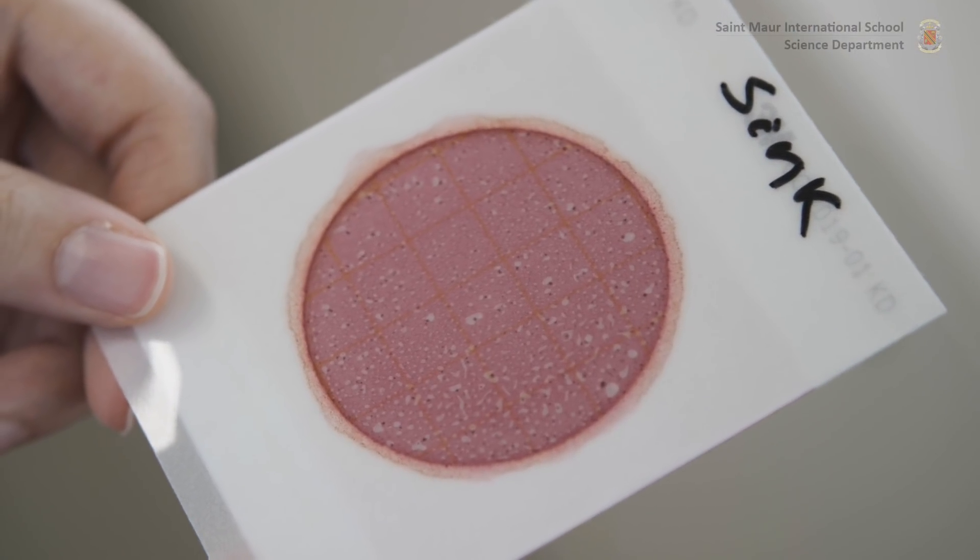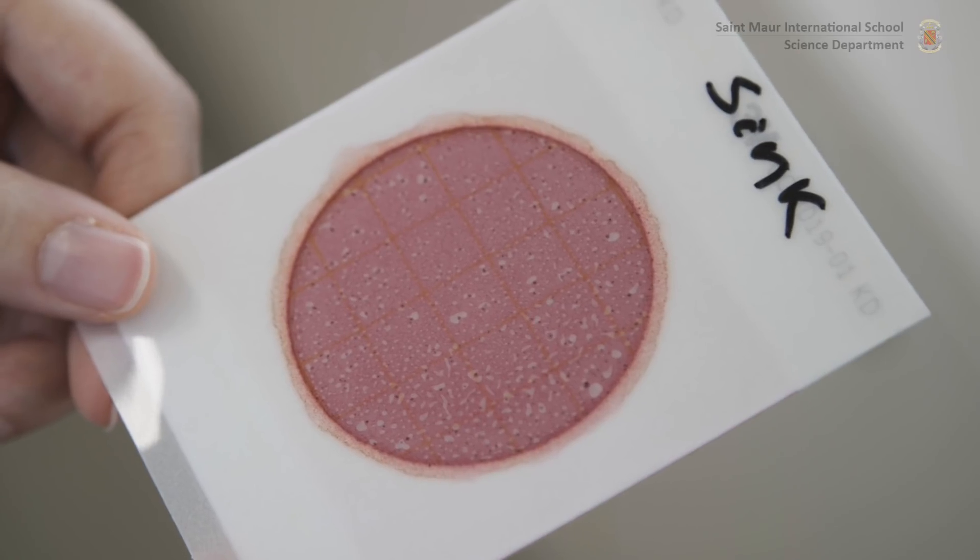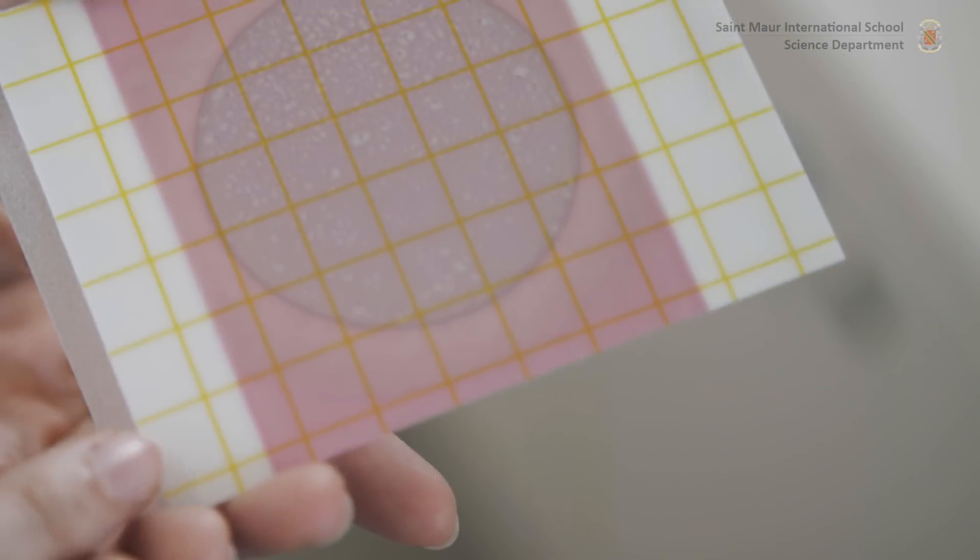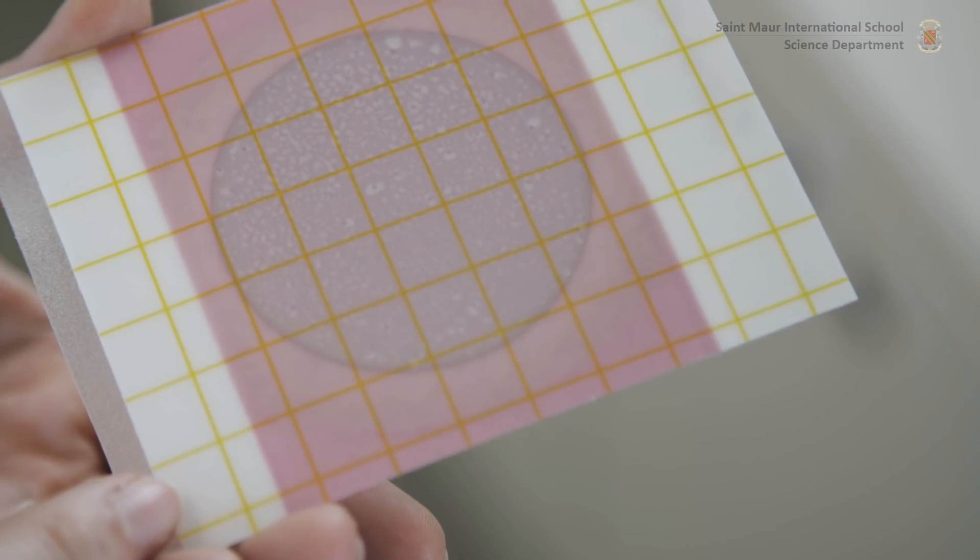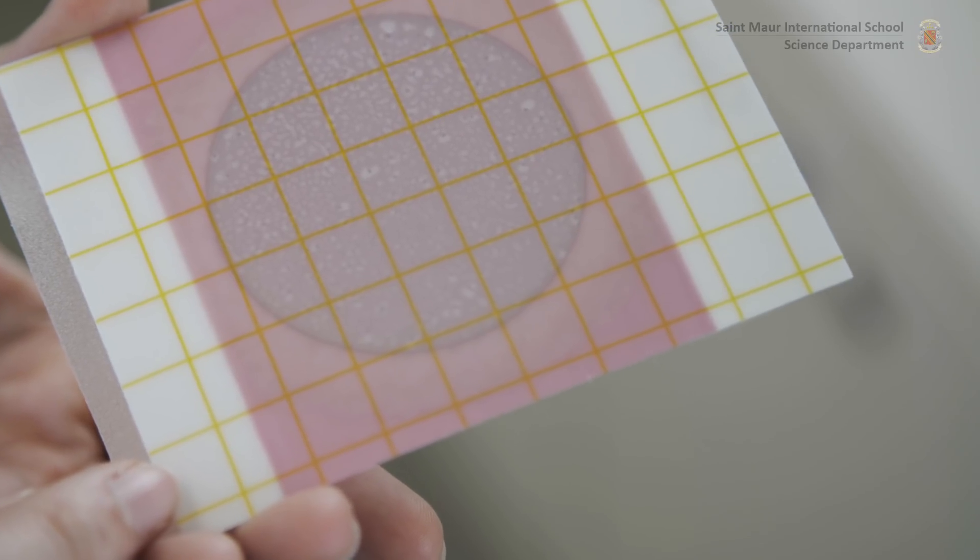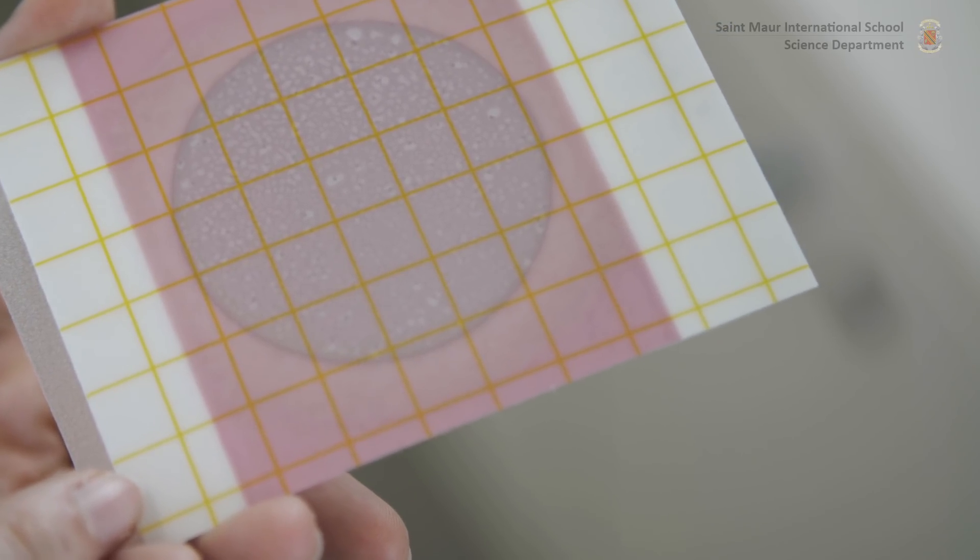Coliforms will appear as red colonies with or without gas production and can be estimated either per square centimeter using the yellow grid as reference or relative to the initial volume of inoculum.